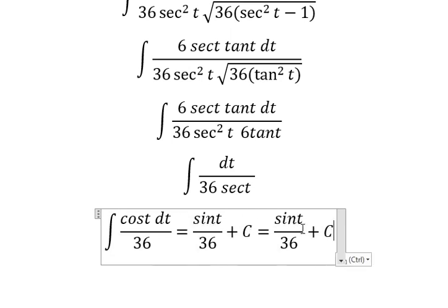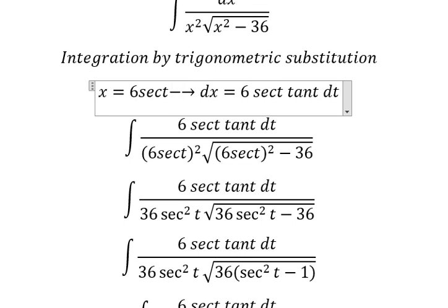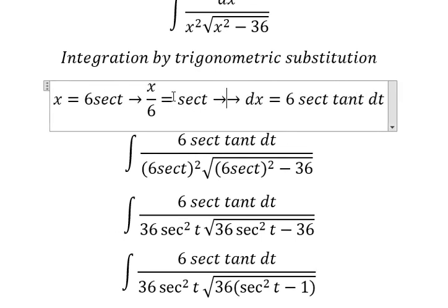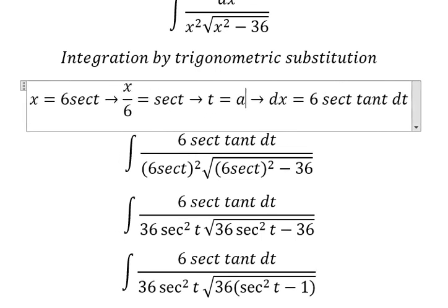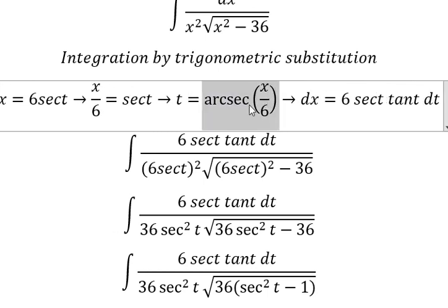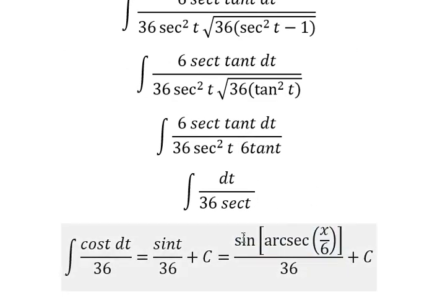Now for t, we need to divide both sides by 6, and we got t equals arcsecant of x over 6. So I need to put this one to change for t, and this is the final answer.